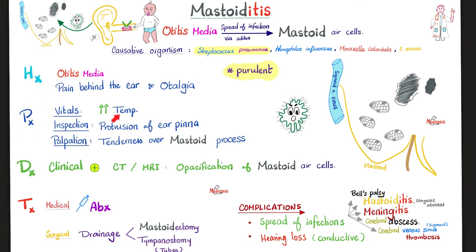Physical exam: vital signs show fever. By inspection, there is protrusion of the ear pinna — because the mastoid inflammation is pushing the ear pinna forwards. Remember, it's itis — acute inflammation: redness, hotness, swelling, pain, loss of function — rubor, calor, tumor, dolor, functio laesa. By palpation, there is tenderness over the mastoid process just behind the ear. Diagnosis is made clinically based on history and physical exam. CT scan and MRI will help show opacification of the mastoid cells, confirming the diagnosis of mastoiditis.